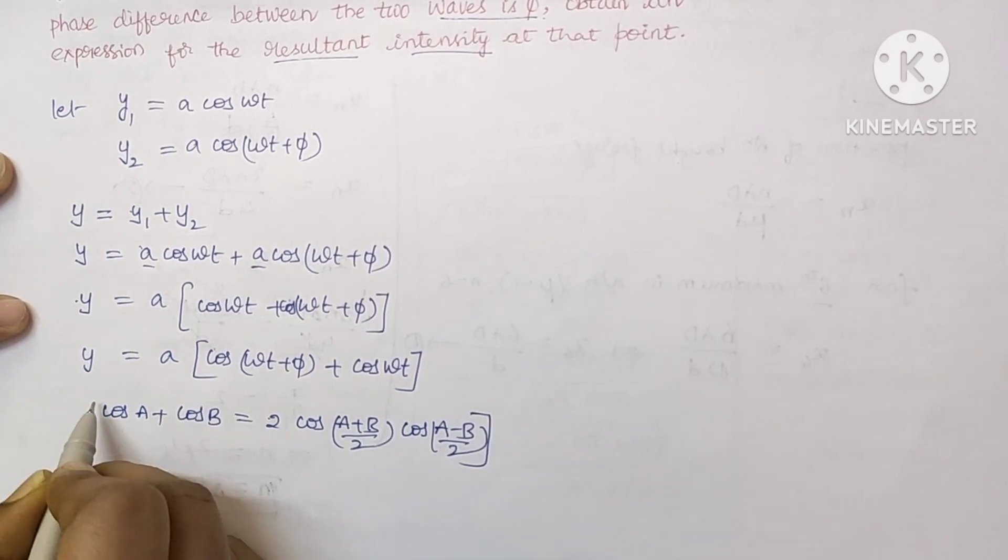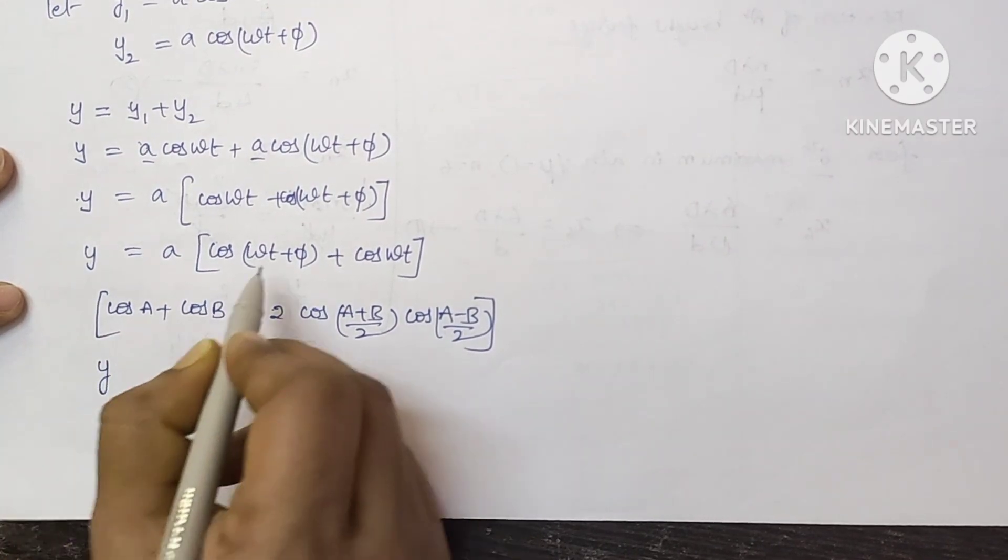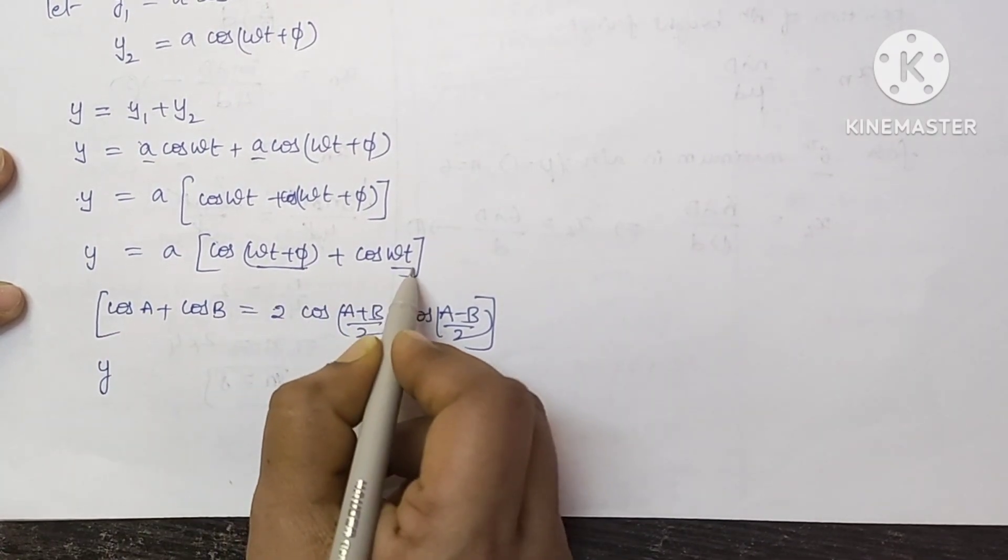So this is the trigonometric formula. So let us substitute according to this. This is A, and this is B.